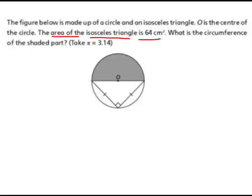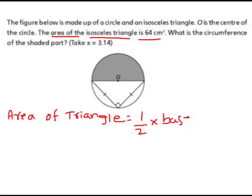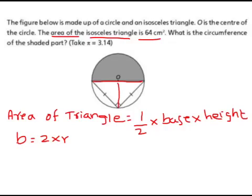What is the formula for area of triangle? Area of triangle equals half into base into height. In this triangle the base would be the diameter of the circle, so diameter is two radius, so base equals 2r. Height would be from here to here which is the radius of the circle, so height would be r.